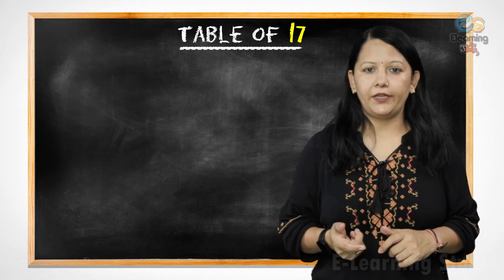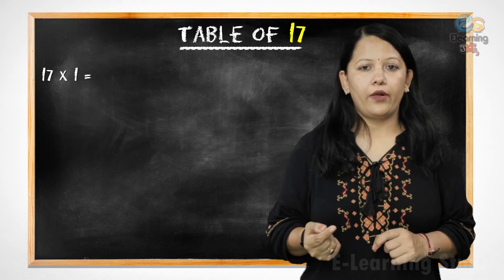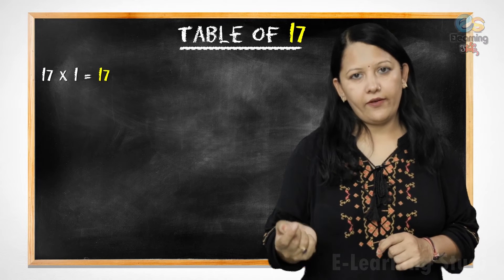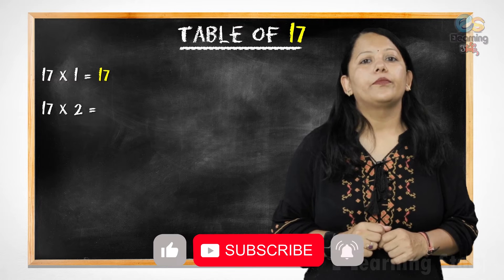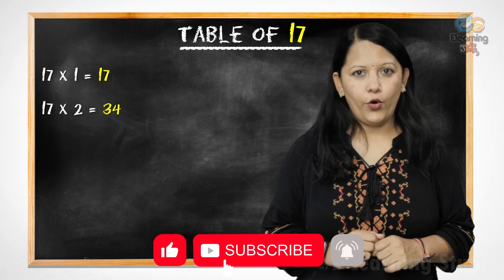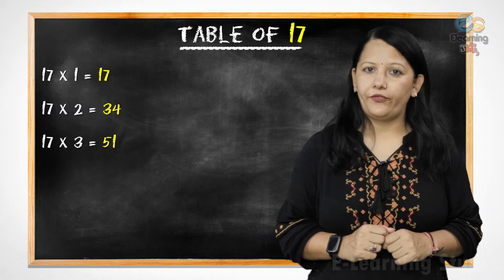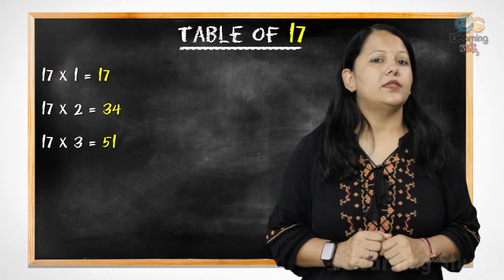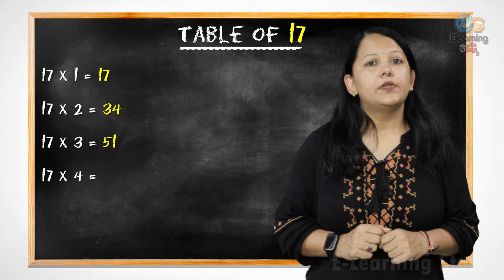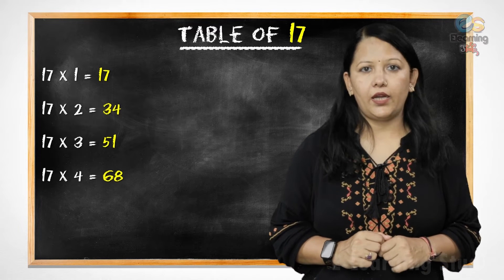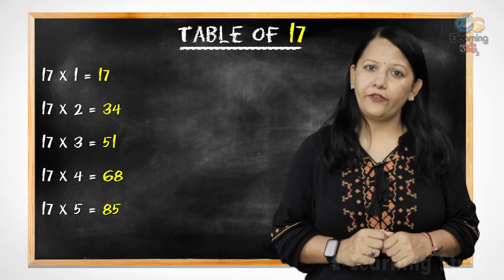Now let's revise it. 17 ones are 17, 17 twos are 34, 17 threes are 51, 17 fours are 68, 17 fives are 85,